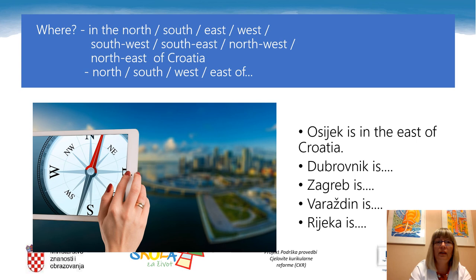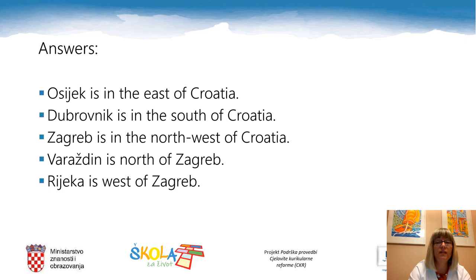In order to say where a town is situated, we say that the place is in the north or in the south, etc. As in this example, Osijek is in the east of Croatia. If we want to say where the town is situated related to another one, we say, for example, Osijek is east of Zagreb. Not too difficult, right? And now, where is Dubrovnik, Zagreb, Varazdin and Rijeka? Can you say where they are situated? There are more answers possible. Be careful. Here are some possible answers: Osijek is in the east of Croatia. Dubrovnik is in the south of Croatia. Zagreb is in the north-west of Croatia. Varazdin is north of Zagreb. Rijeka is west of Zagreb.